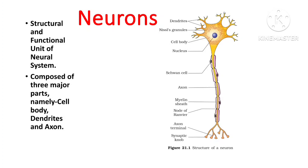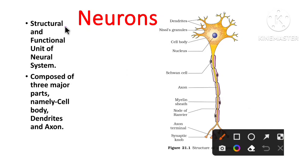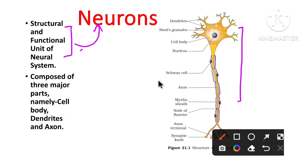We will start with neurons. As we have seen, the neuron is a structural and functional unit of the neural system. Similarly, the kidney also has a structural and functional unit. Looking at this neuron cell, there are three major important parts.